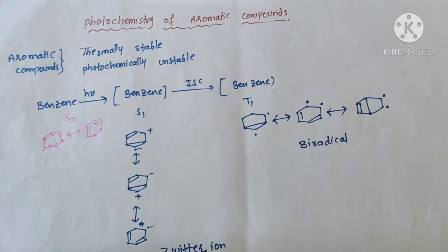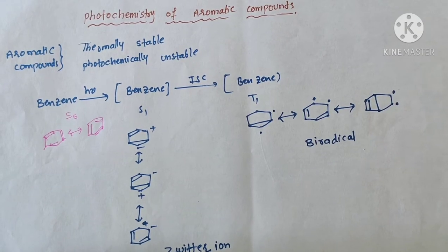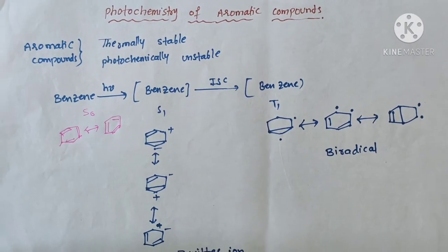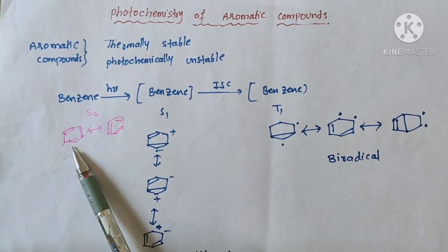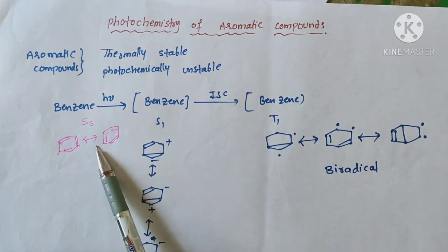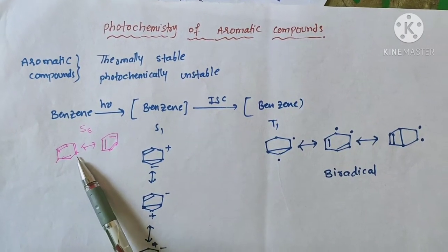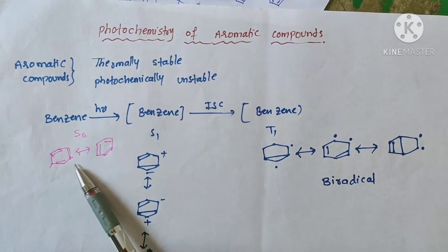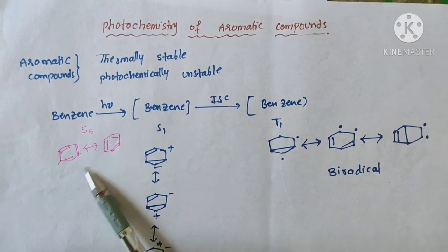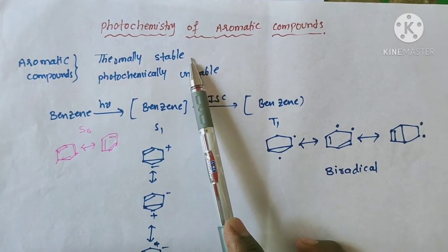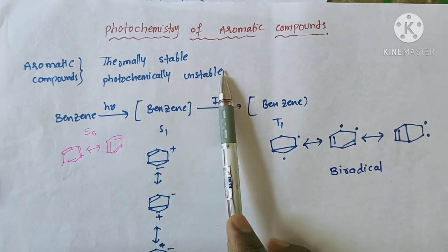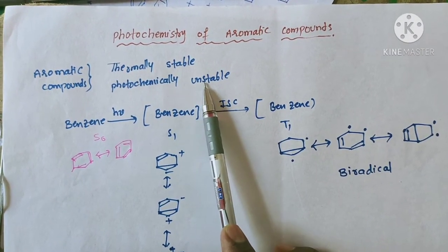In this video, we try to learn the photochemistry of aromatic compounds. We know very well that aromatic compounds are highly unsaturated compounds — for example, benzene is represented as cyclohexatriene. Even though they are highly unsaturated compounds, very drastic conditions are needed to make them participate in electrophilic substitution reactions, meaning aromatic compounds are thermally highly stable. But these aromatic compounds are unstable under photochemical conditions — they become highly unstable and highly reactive.